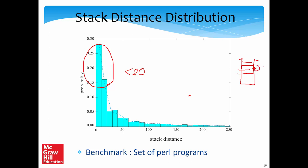The low stack distance tells us there is a significant amount of temporal locality in memory accesses. This comes from the way we code: functions with for loops that run the same set of addresses over and over, calling similar functions and accessing similar data in loops and while loops — this is what gives us temporal locality and a small stack distance.